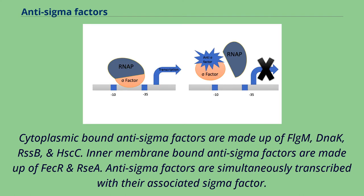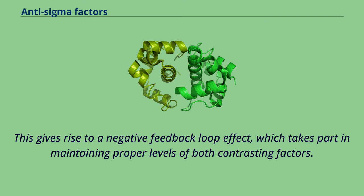These anti-sigma factors are divided into either cytoplasmic or intermembrane-bound anti-sigma factors. Cytoplasmic-bound anti-sigma factors are made up of FLGM, NAC, RSSB, and HSCC. Intermembrane-bound anti-sigma factors are made up of FecR and RssI. Anti-sigma factors are simultaneously transcribed with their associated sigma factor, giving rise to a negative feedback loop effect which maintains proper levels of both contrasting factors.